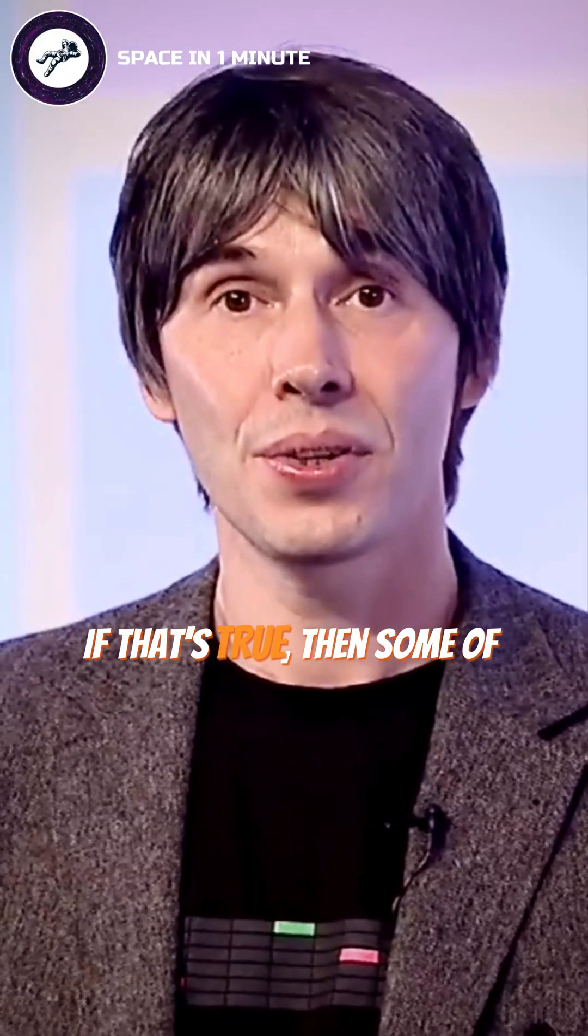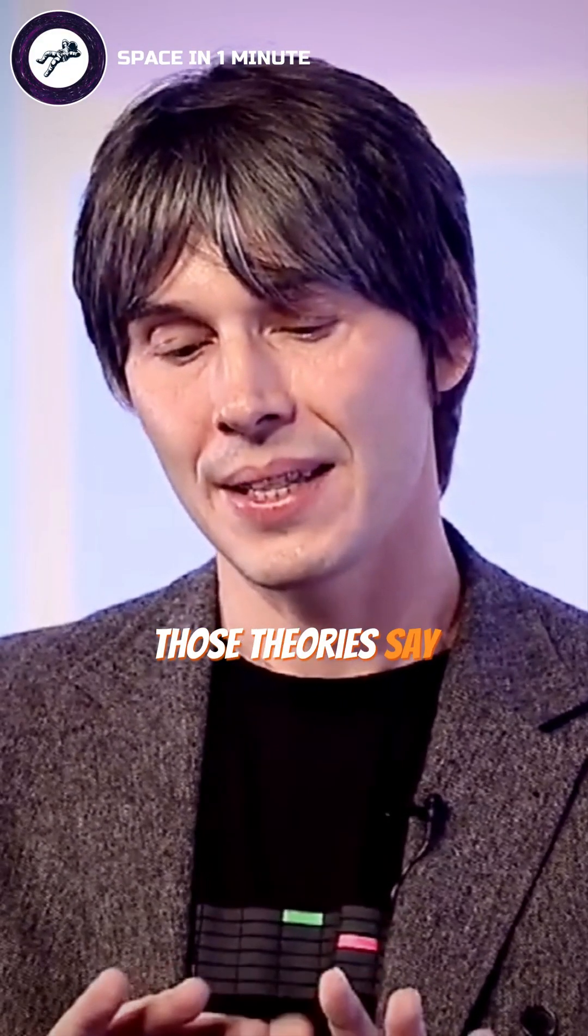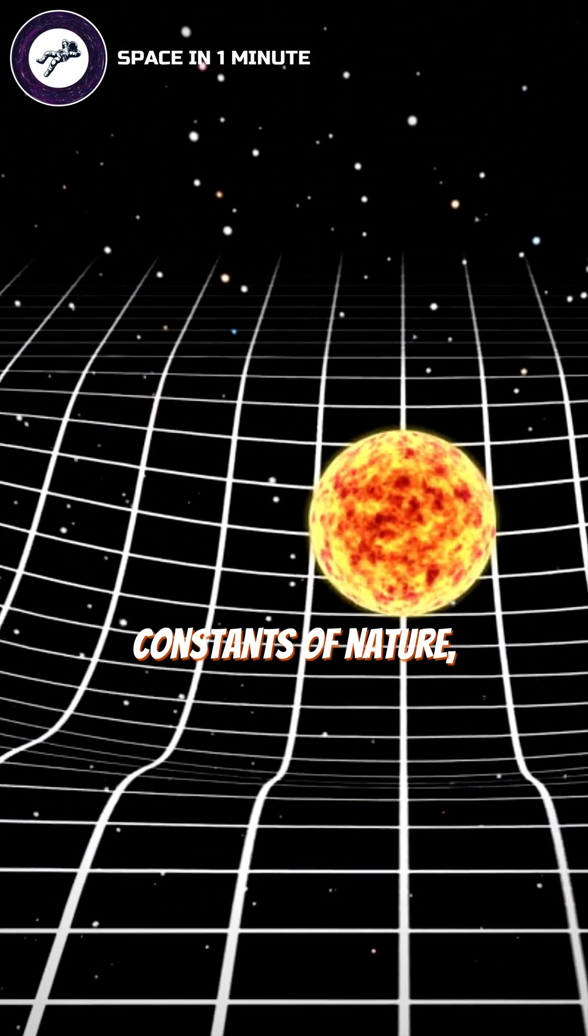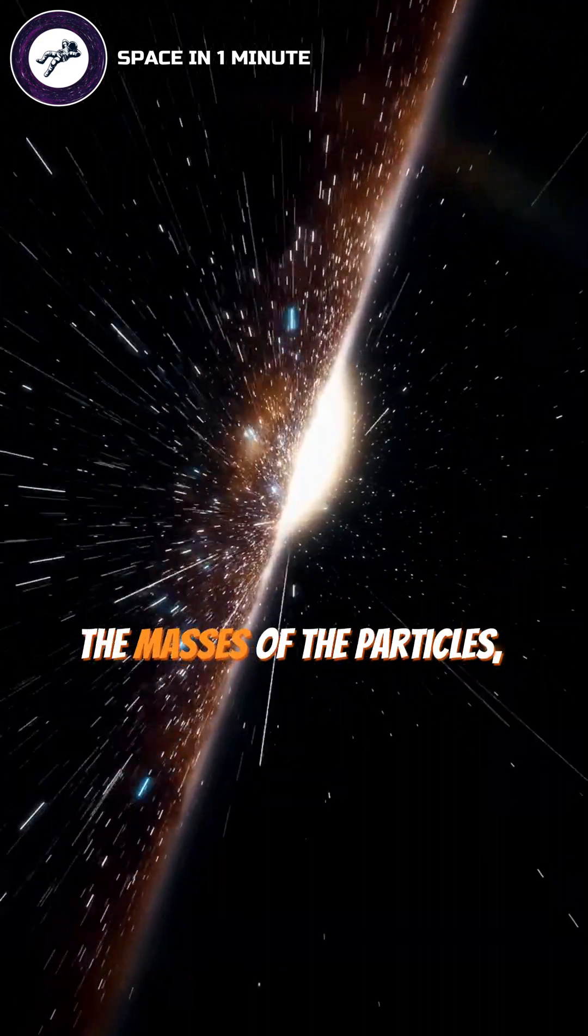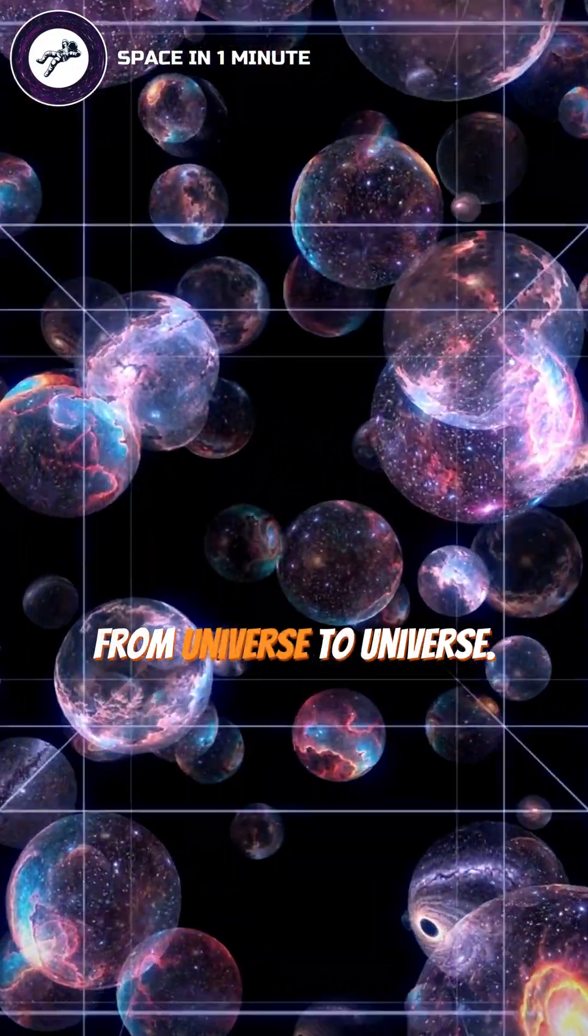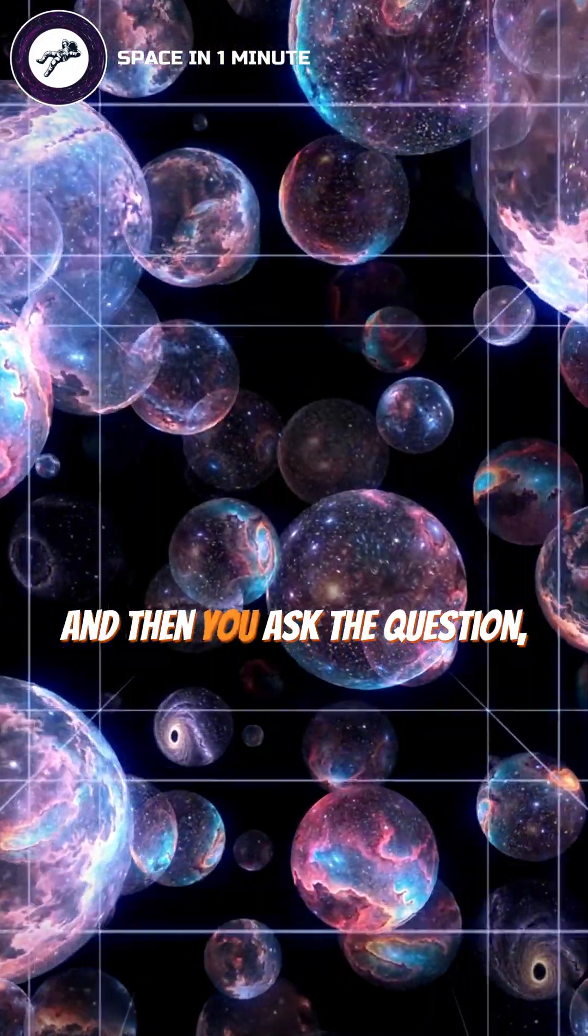And I should say one extra thing. If that's true, then some of those theories say that what we call the constants of nature, things like the strength of gravity, the speed of light, the masses of the particles, can vary from universe to universe.